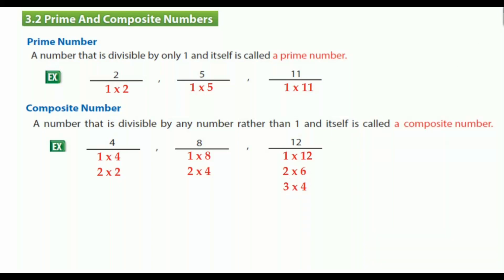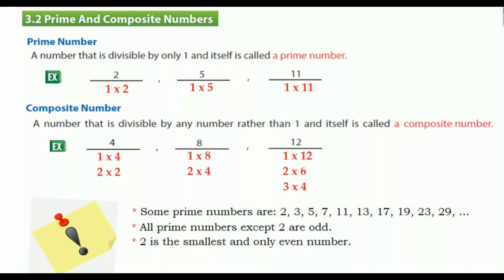We have some notes; these notes are very important. Some prime numbers are 2, 3, 5, 7, 11, 13, 17, 19, 23, and 29. Another note: all prime numbers except 2 are odd. Another note: 2 is the smallest and only even prime number. Last note: 1 is not prime or composite.